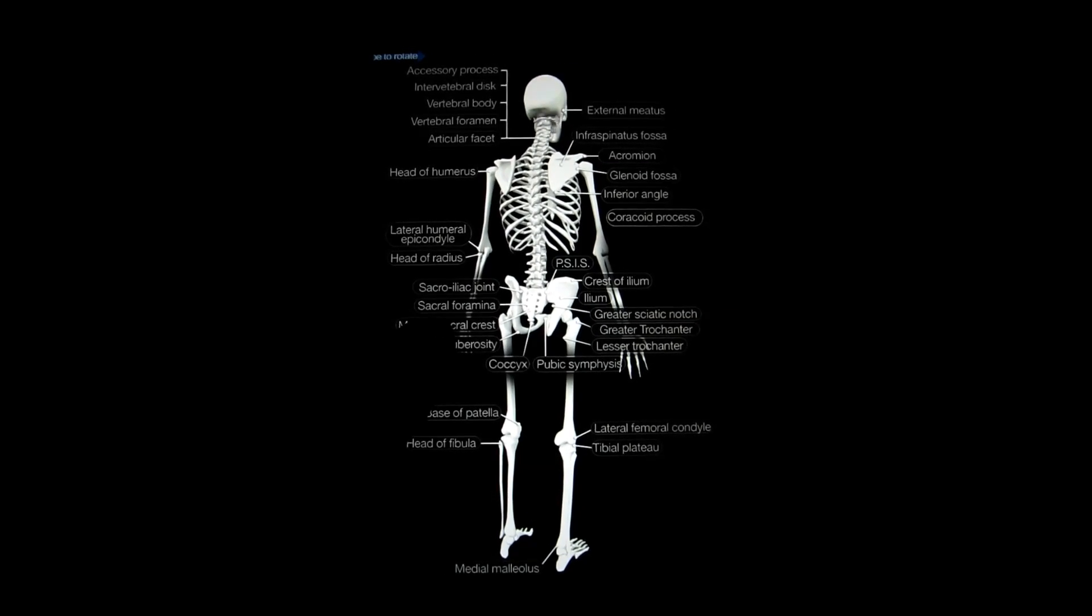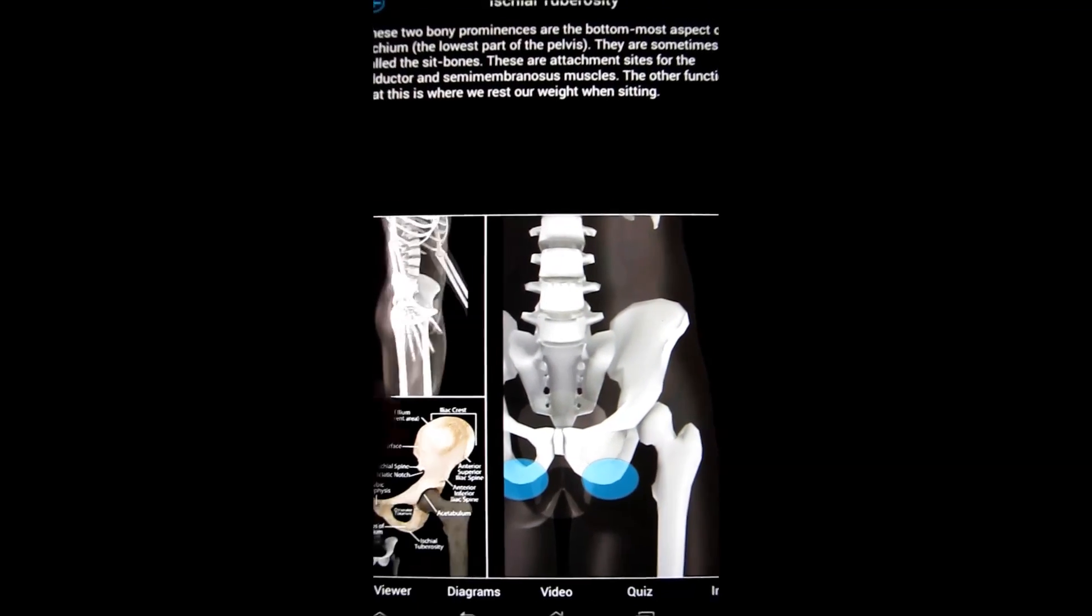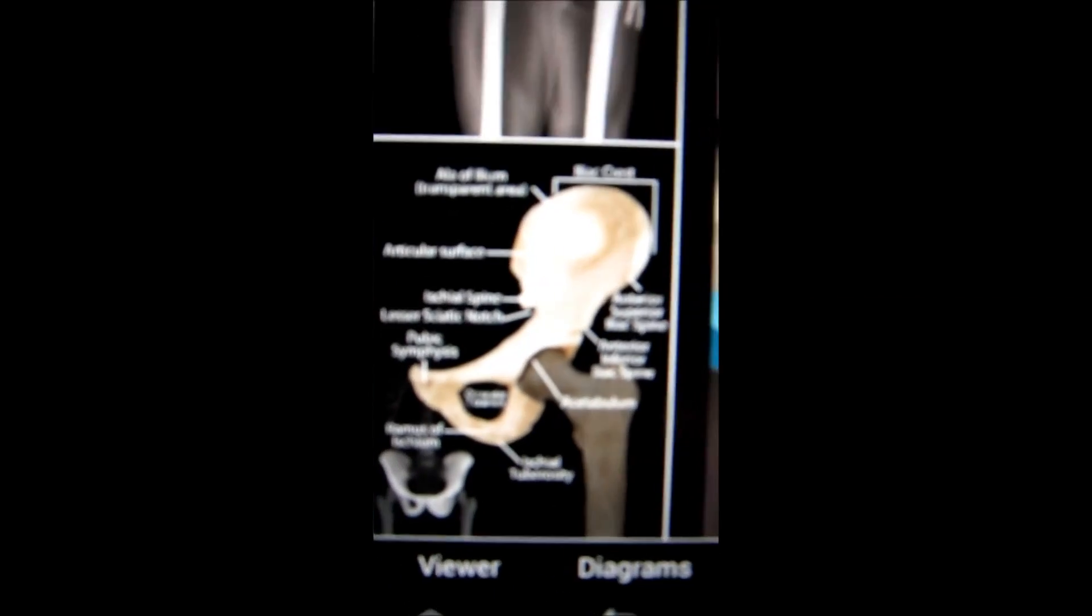Let's go ahead and take a look at the ischial tuberosity. Right there. The base. 3D rotation. Nice close up image as well.